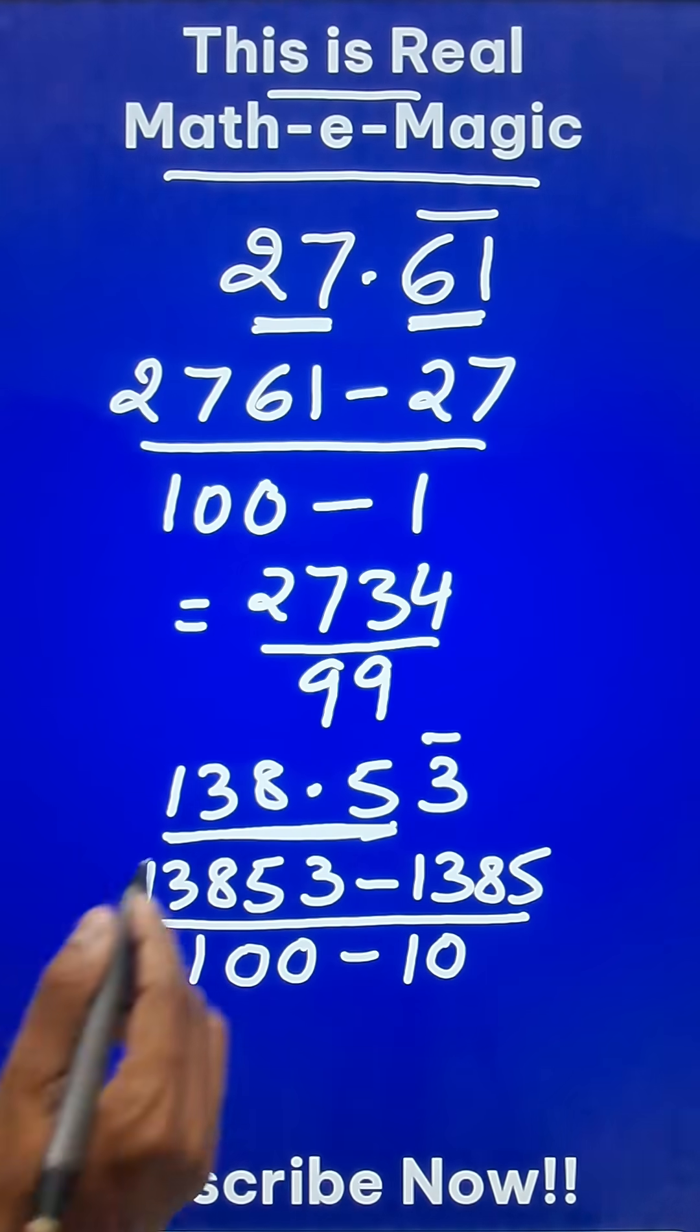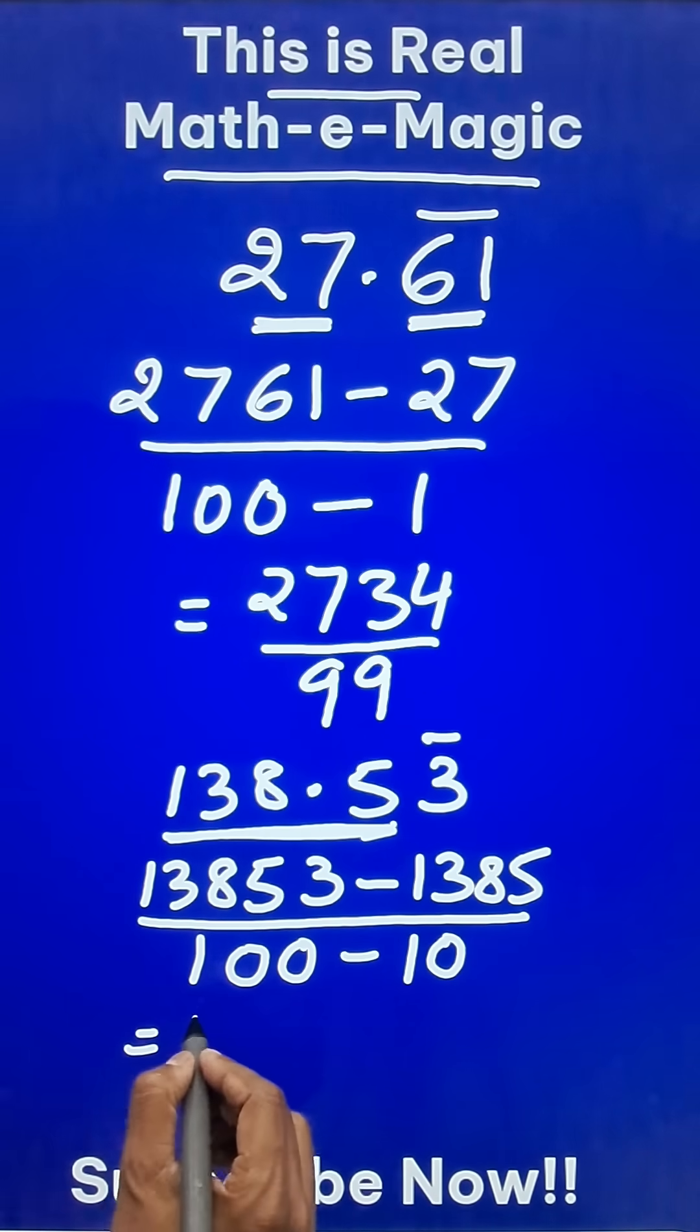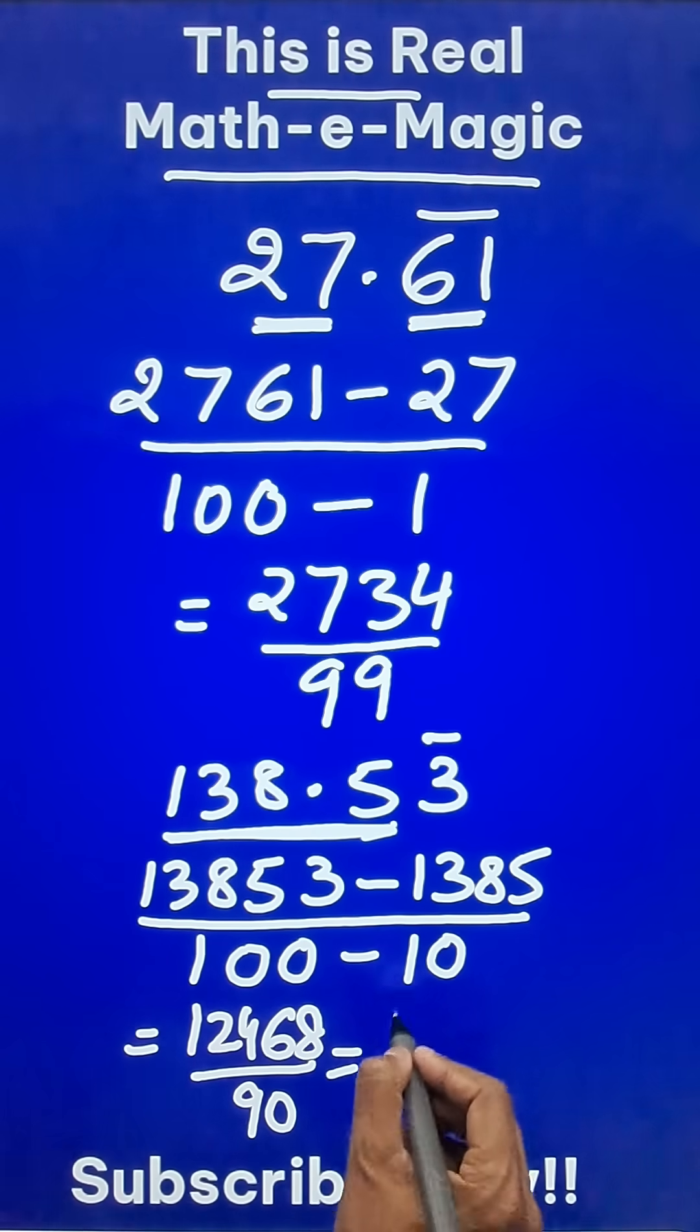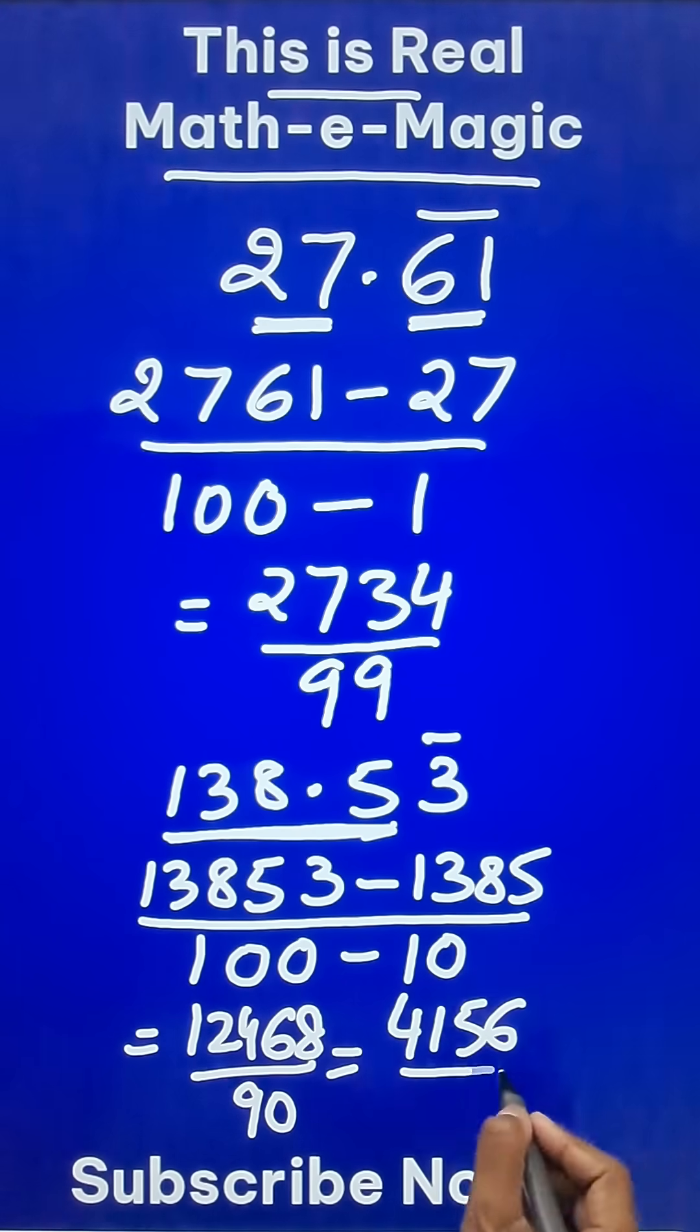So subtract 10 from this, and therefore your answer for the question will be 12468 upon 90, that reduces to 4156 upon 30.